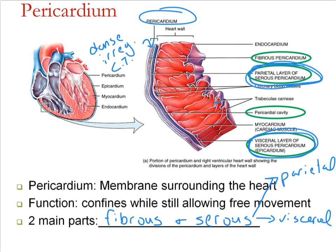The parietal layer — do you guys remember parietal versus visceral? Viscera are the internal organs, so the visceral layer is the layer of the serous pericardium that is exactly against the heart wall. This is also known as the epicardium. The outer, more superficial layer is the parietal layer of the serous pericardium, which is adjacent and right next to the fibrous layer.